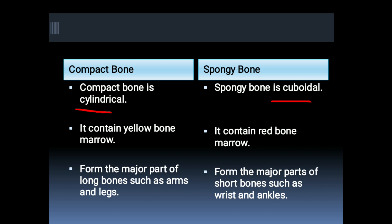Compact bone contains yellow bone marrow while spongy bone contains red bone marrow. Compact bone forms the major part of long bones such as arms and legs, while spongy bone forms the major part of short bones such as wrist and ankles.